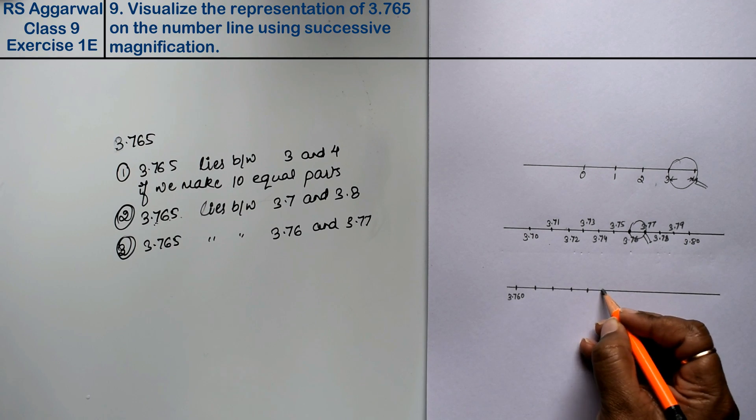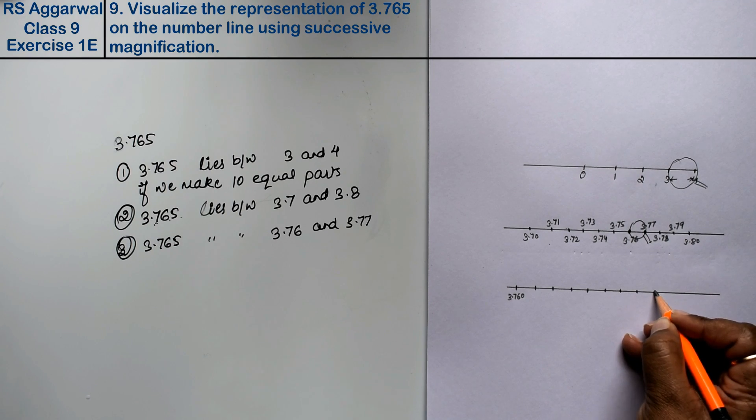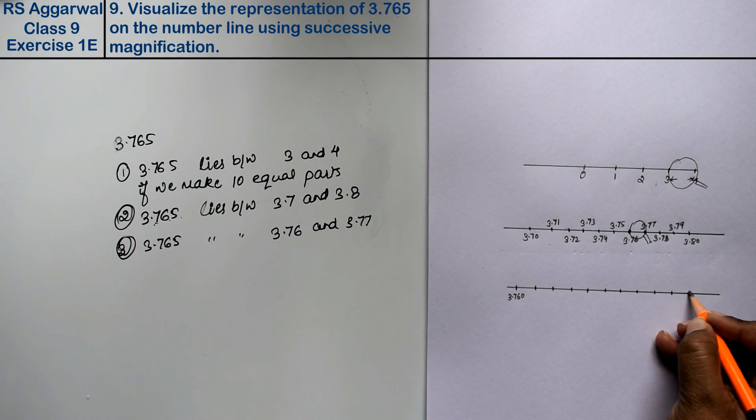2, 3, 4, 5, 6, 7, 8, 9 and 10. So here is 3.770.